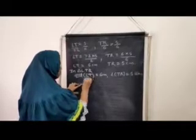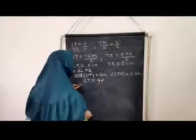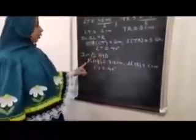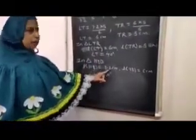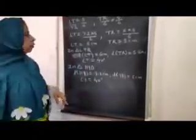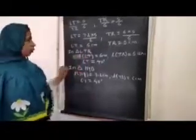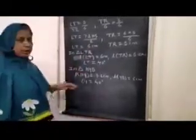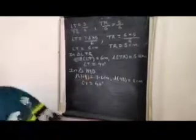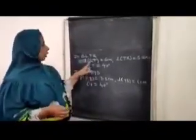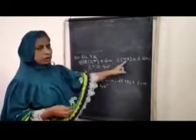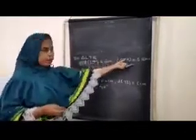Writing down the measurements: in triangle LTR, length LT equals 6 cm, length TR equals 5 cm, and angle T equals 40 degrees. In triangle HYD, length HY equals 7.2 cm, length YD equals 6 cm, and angle Y equals 40 degrees. We now have all the measurements for both similar triangles and we can proceed to draw them.